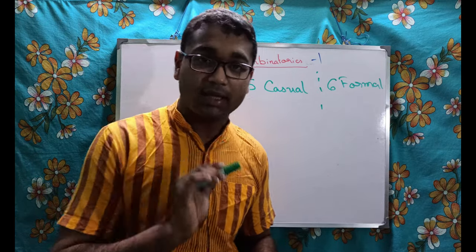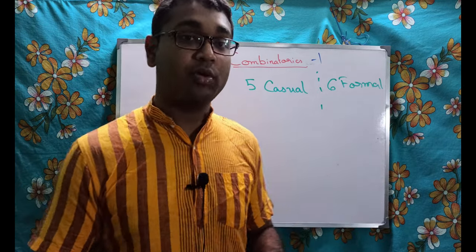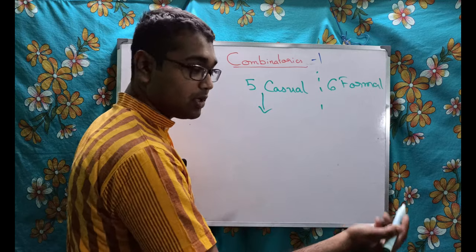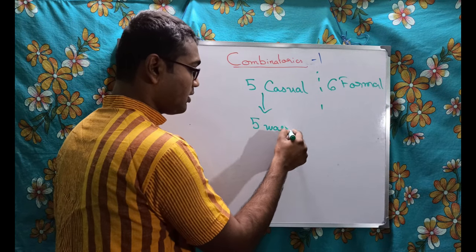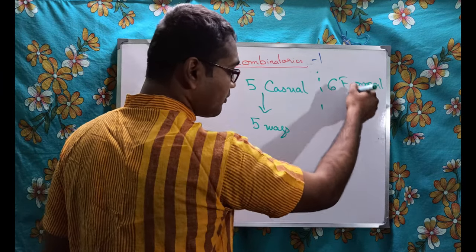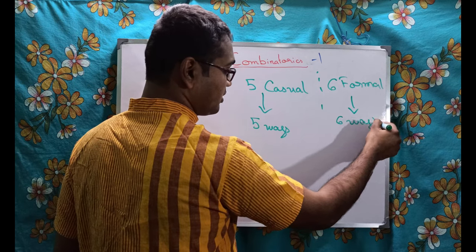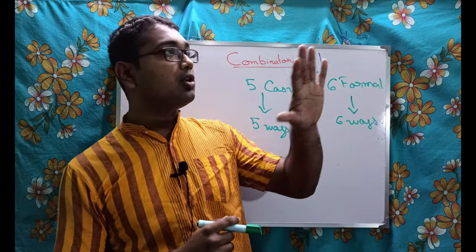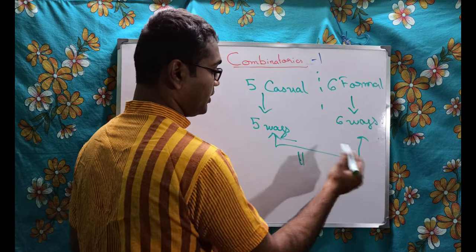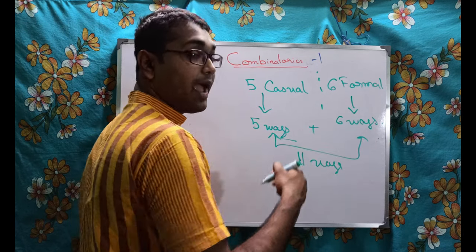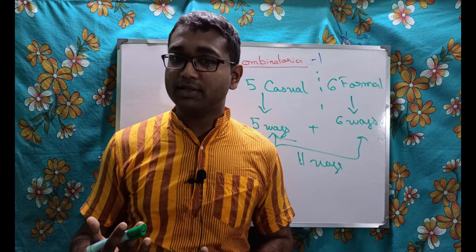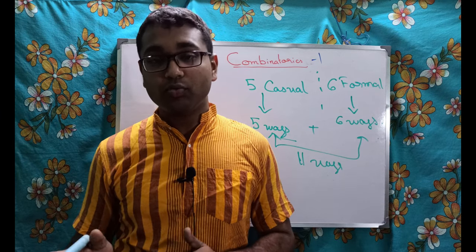Obviously the answer is 11 — you can wear any of the five casuals, giving you five ways from that group, or any of the six formals, giving you six ways from that group. As a whole you can dress up in 11 ways. These two numbers are added because it is common sense — the Sum Rule is clear.